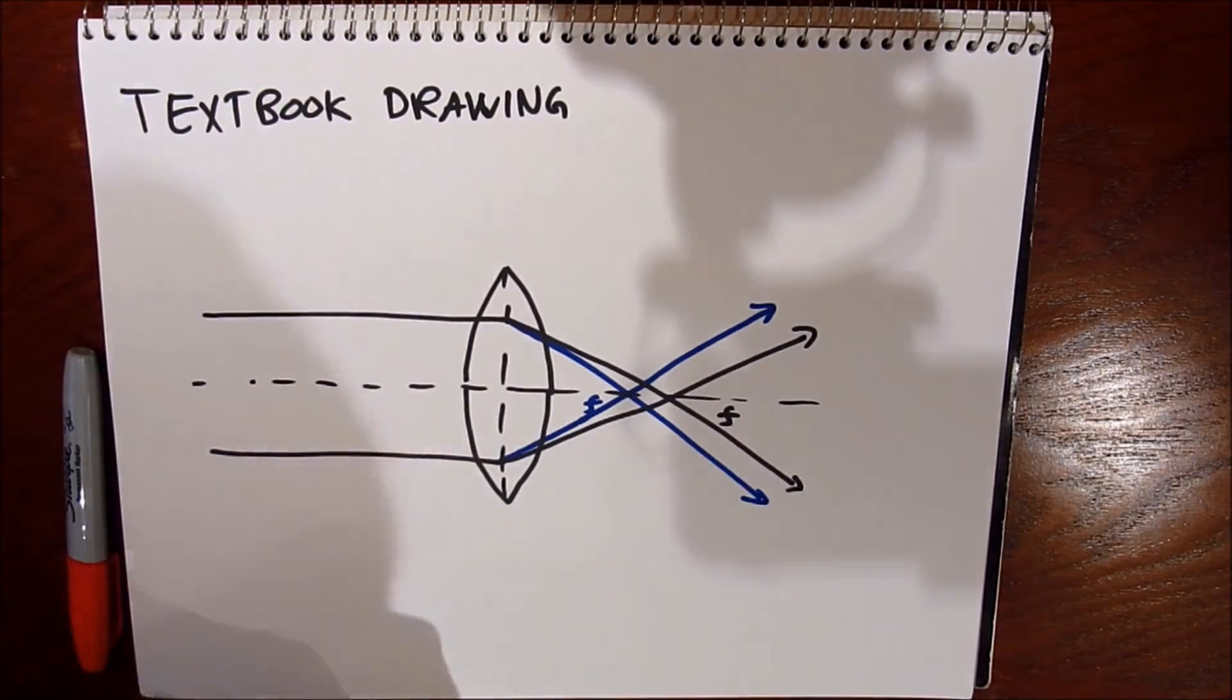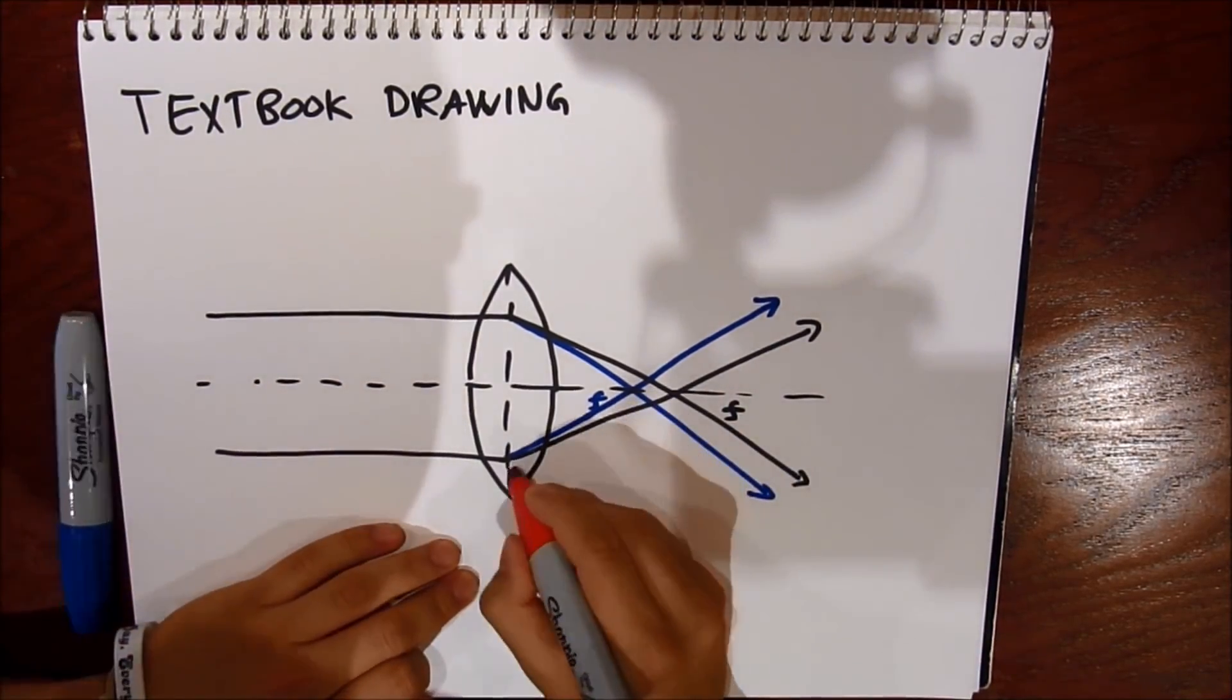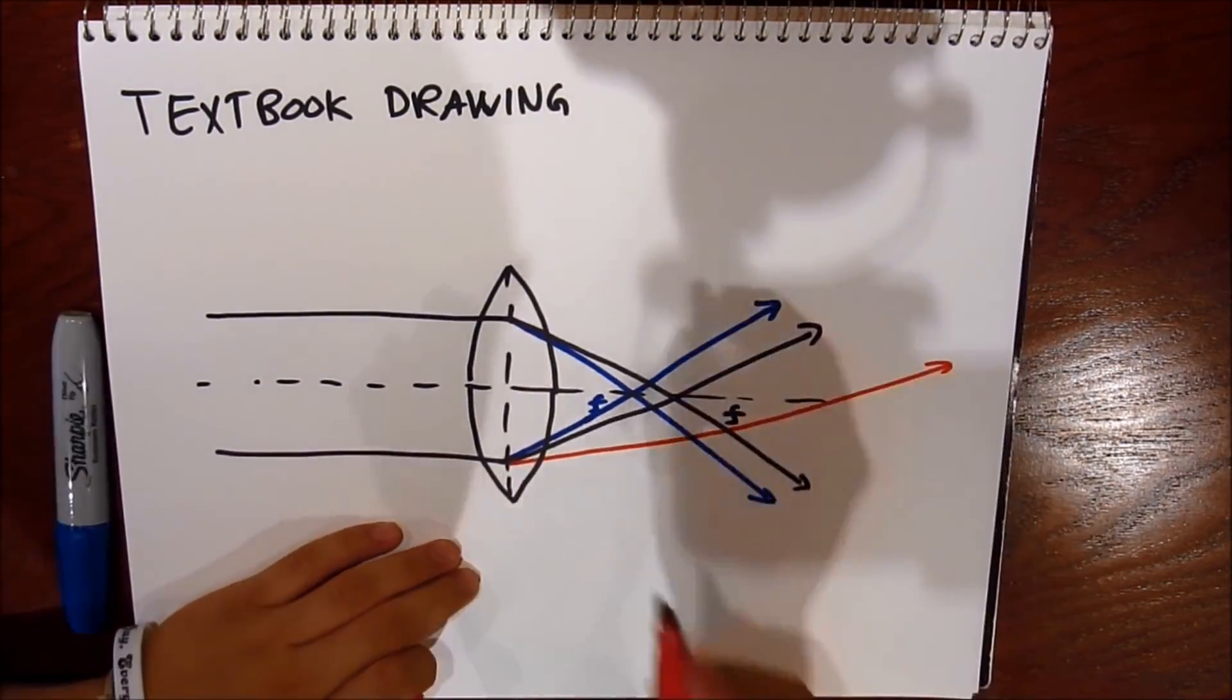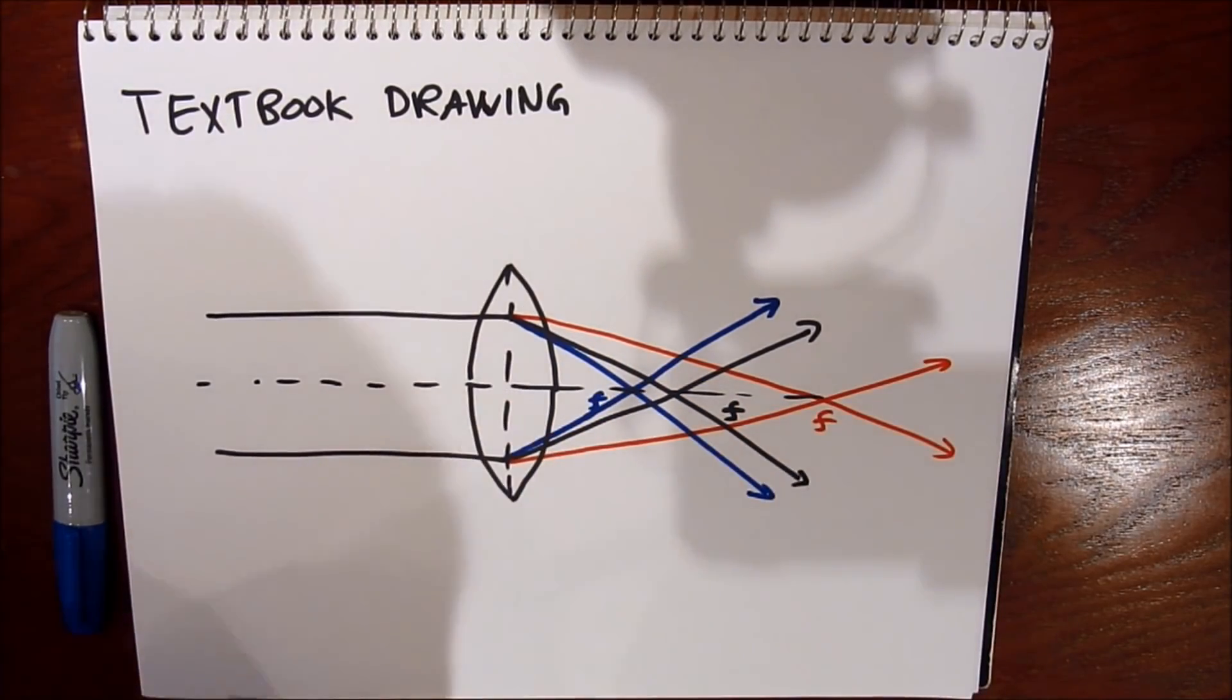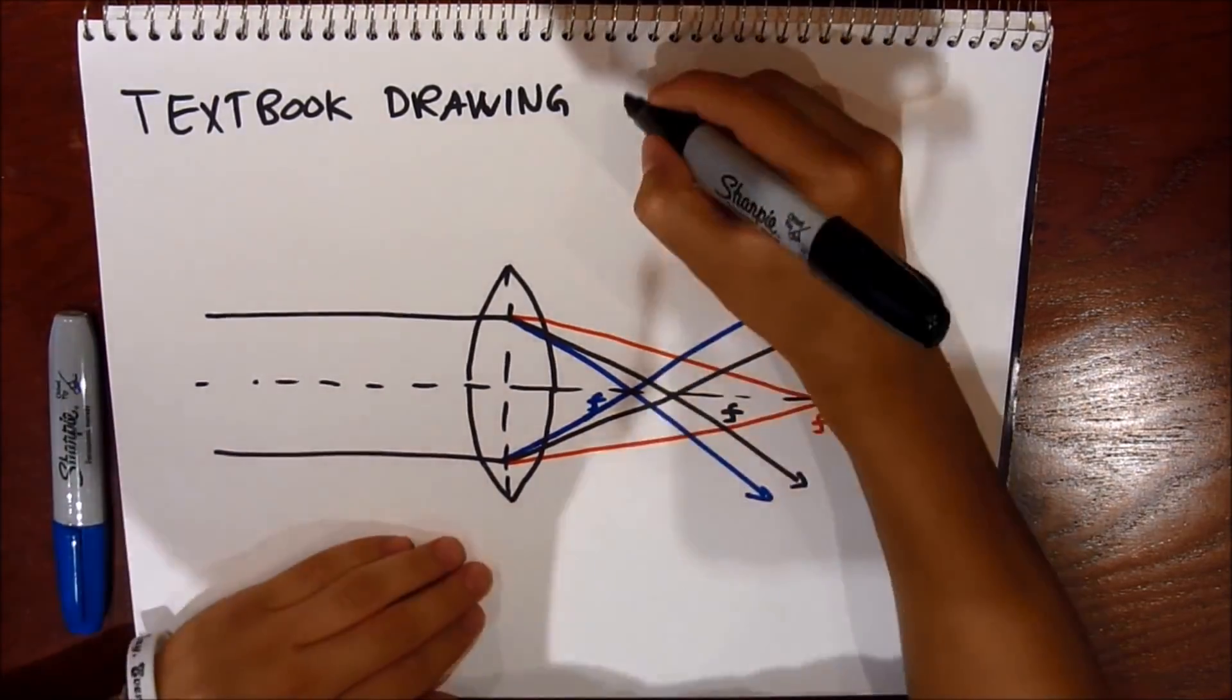But what you need to know is that blue light bends the most, and that red light bends the least. So there are actually multiple focal lengths. And this is, of course, an exaggeration. It's not that drastic.